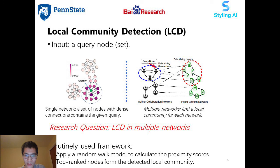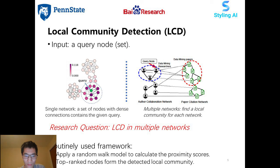As a fundamental task in large network analysis, local community detection aims to find a set of nodes with dense connections that contain the given query. In this paper, we study this problem in the multiple network setting, where we aim to find a local community for each network. For example, given a query on data mining, we would like to find researchers in the data mining field as well as publications in data mining conferences. Random walk-based methods are routinely used for this task, first applying a random walk model to calculate proximity scores associated with the query, then top-ranked nodes form the detected local community.